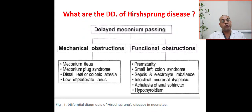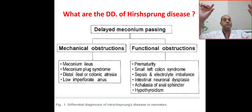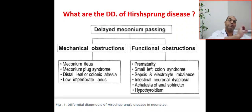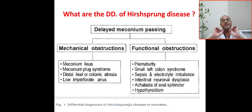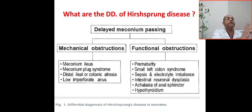Moving to the anus, it will be anorectal malformation or imperforate anus. So to summarize the mechanical obstruction: in the ileum we have meconium ileus — differentiated from meconium plug syndrome — and distal ileal or colonic atresia, and anorectal malformation. This is the first category.